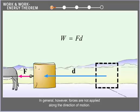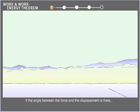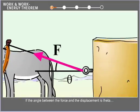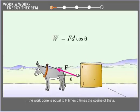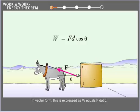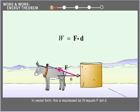In general, however, forces are not applied along the direction of motion. If the angle between the force and the displacement is theta, the work done is equal to F times D times the cosine of theta. In vector form, this is expressed as W equals F dot D.